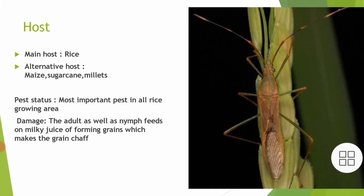Host: The main host of Leptocorisa is rice, and the alternative hosts are maize, sugarcane, millet, etc. Pest Status: It is the most important pest in all rice growing areas. The adult as well as nymphs feed on the milky juice of forming grains, which makes the grain chaff.